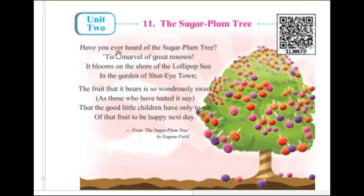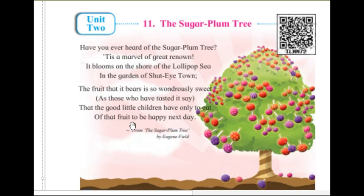Have you ever heard of the sugar plum tree? It's a marvel of great renown. It blooms on the shore of the lollipop sea in the garden of shut-eye town. The fruit that it bears is so wondrously sweet that the good little children have only to eat of that fruit to be happy next day. Poet: Eugene Field.